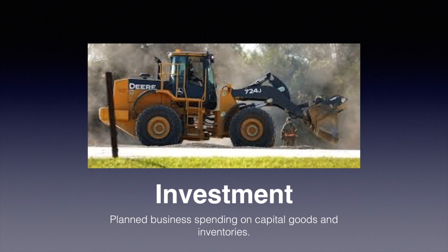Investment includes planned business spending on capital goods and inventories — business spend on plant, equipment, and machinery, as well as stock. These are all included under the category of investment. Comparing the same countries using 2012 figures, China is at about 46% of GDP, Pakistan at 10.9%, the US at 12.8%, and the UK at 14.2%.